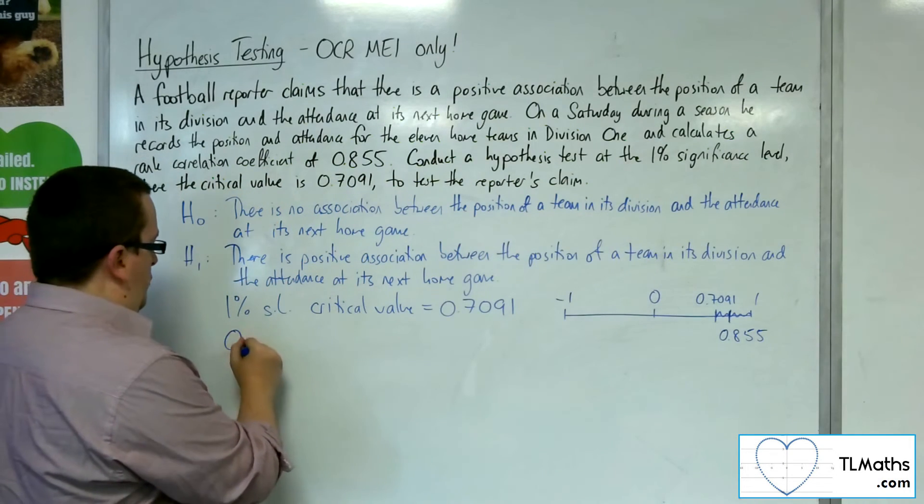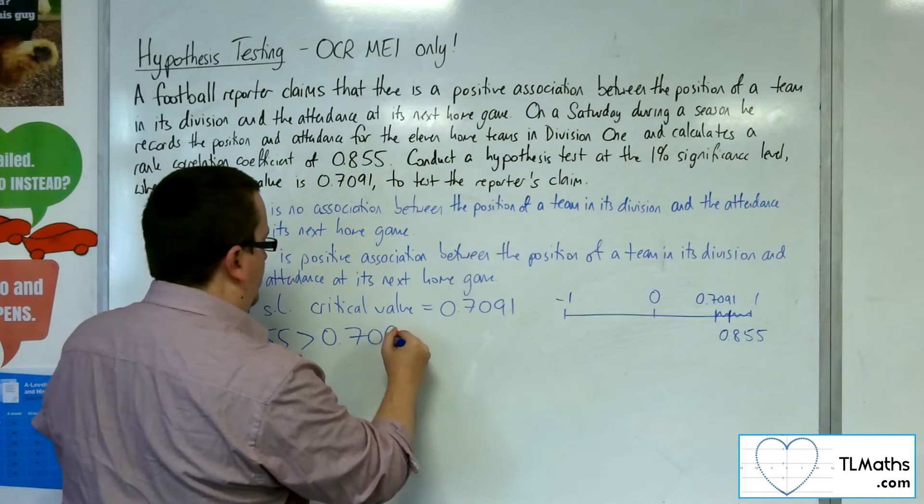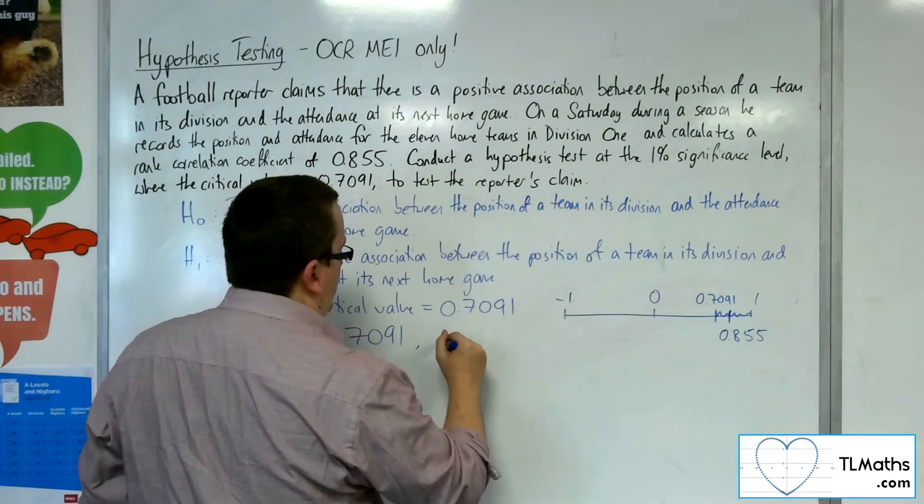Because the 0.855 is larger than 0.7091, the result is significant.